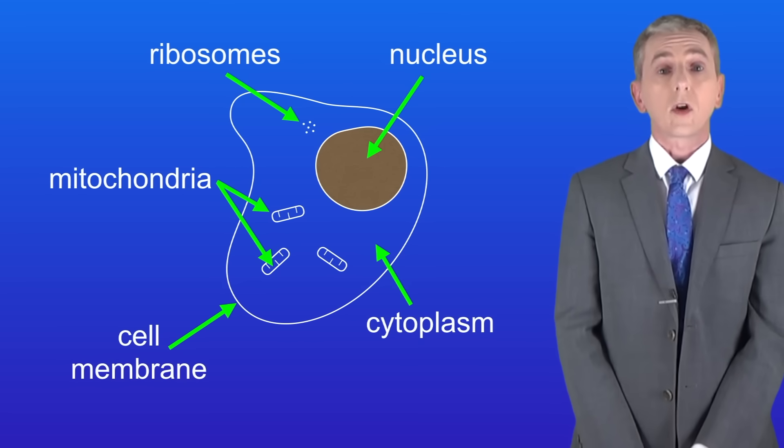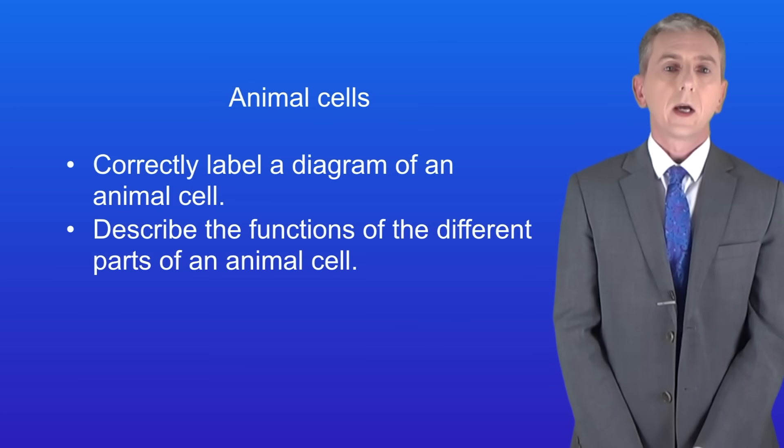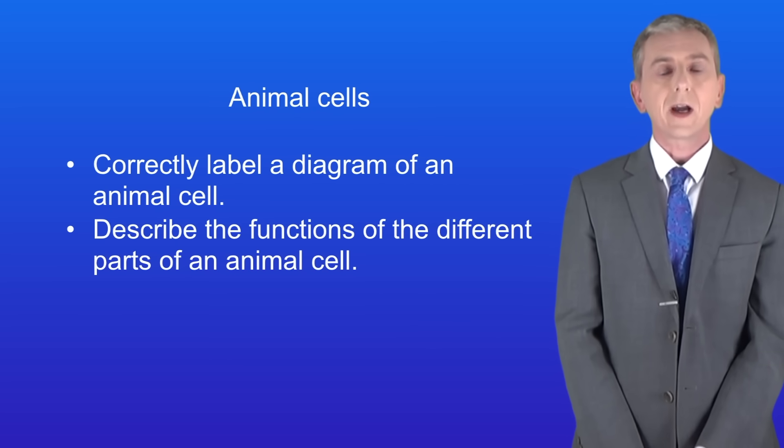Remember you'll find plenty of questions on the structure of animal cells in my revision workbook and you can get that by clicking on the link above. Okay so hopefully now you should be able to correctly label a diagram of an animal cell. You should then be able to describe the functions of the different parts of an animal cell.